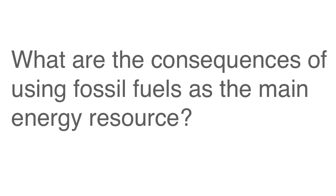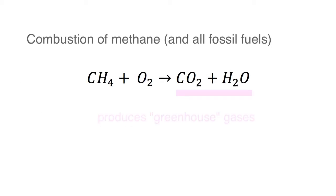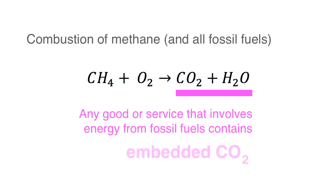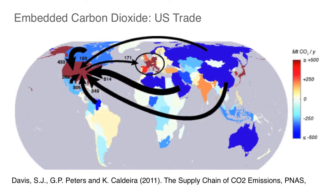What are the implications of using fossil fuels to obtain energy? In order to obtain the chemical energy in fossil fuels, we need to combust the fuel, which results in carbon dioxide. So the burning of fossil fuels to produce a good or service in a sense embeds carbon dioxide in that good or service.